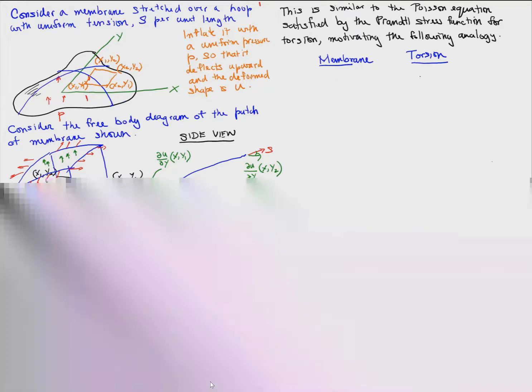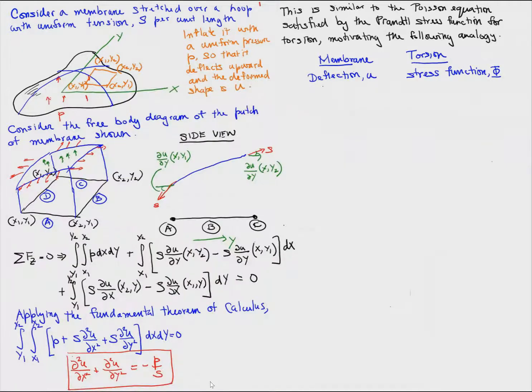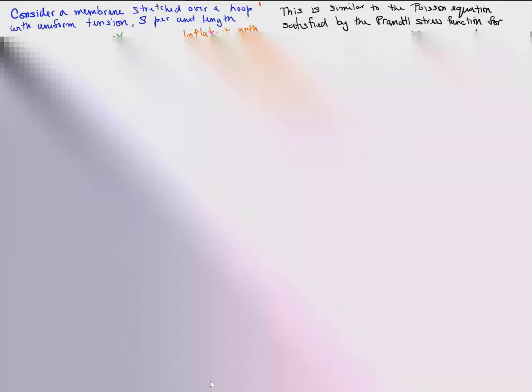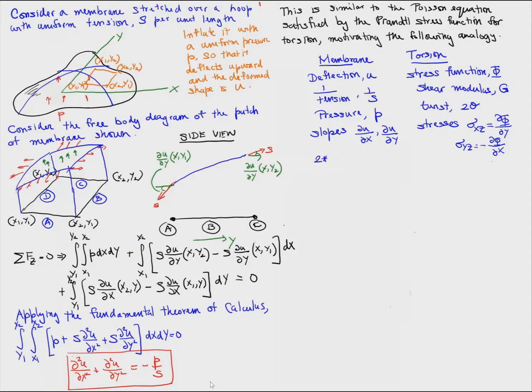So this motivates the following analogy. In the membrane deflection problem, the membrane deflection U corresponds to the stress function phi in the torsion problem. 1 over the tension corresponds to the shear modulus G. The pressure corresponds to twice the twist, the slopes correspond to the stresses, and twice the volume under the membrane corresponds to the torque.